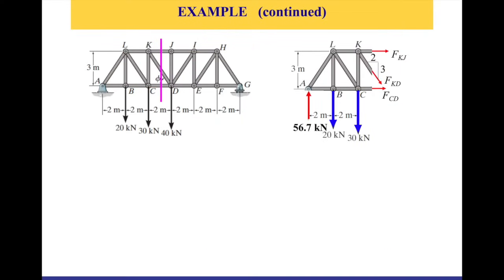Drawing a free body diagram of the section, we use AY equal to 56.7 kN as calculated. We assume all forces coming out of the cut joints — that is, tension. So we have FKG unknown, FKD unknown, and FCD unknown. We now have a system of three unknowns to solve. We construct a new set of equations of equilibrium, and we'll start with the moment equation.